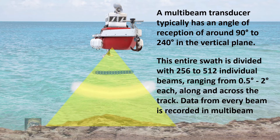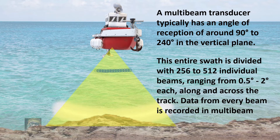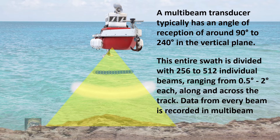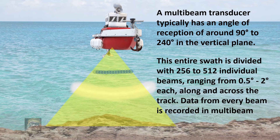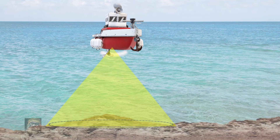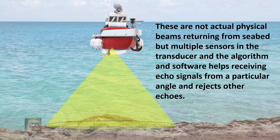Multi beam records 256 to 512 data points with every ping it sends out. In practice, the multi beam transducer has multiple receptors and the software algorithm only receives a return signal from a particular angle, rejecting other echoes.